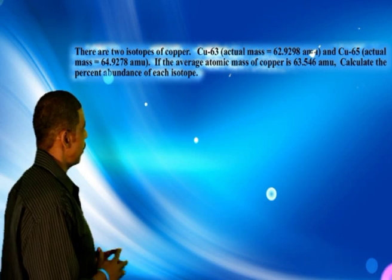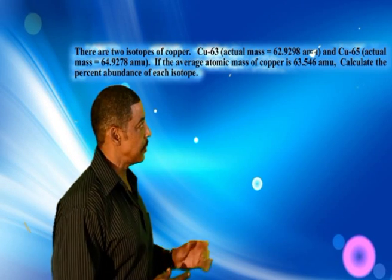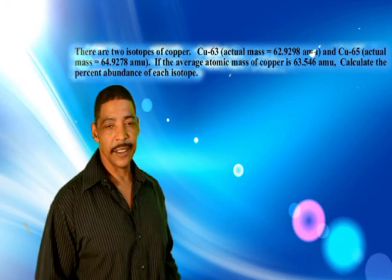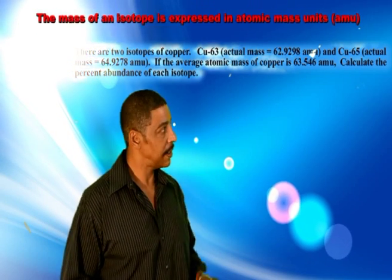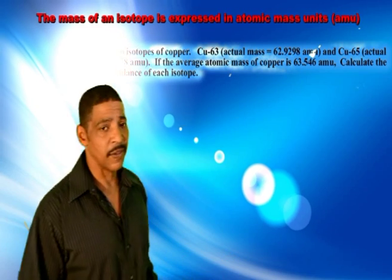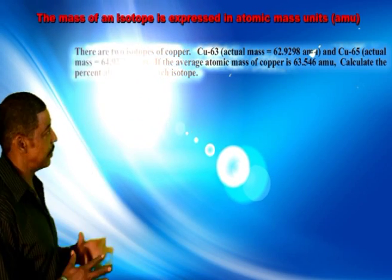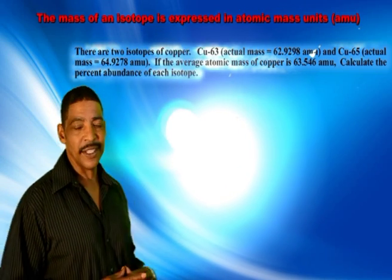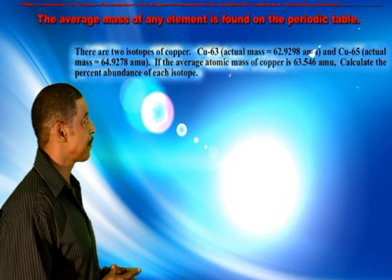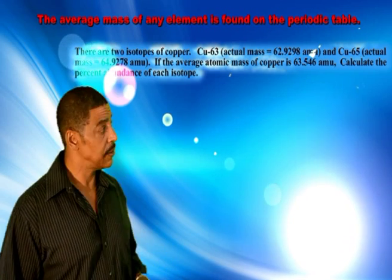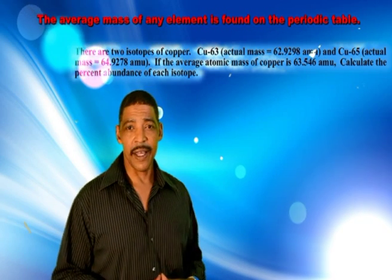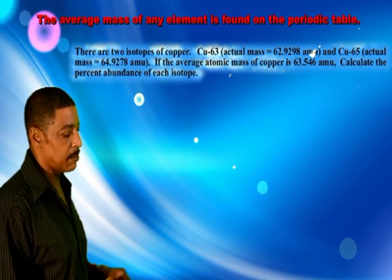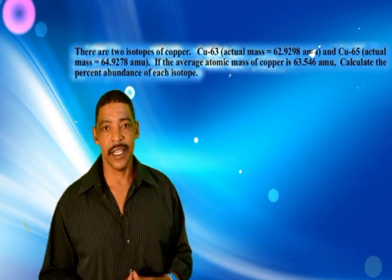Consider the following practice problem where there are two isotopes of copper: copper-63, whose actual mass is 62.9298 amu, and copper-65, whose actual mass is 64.9278 amu. If the average mass of copper is 63.546 amu, calculate the percent abundance of each isotope.